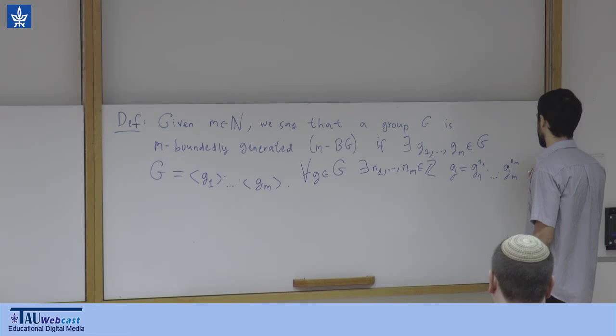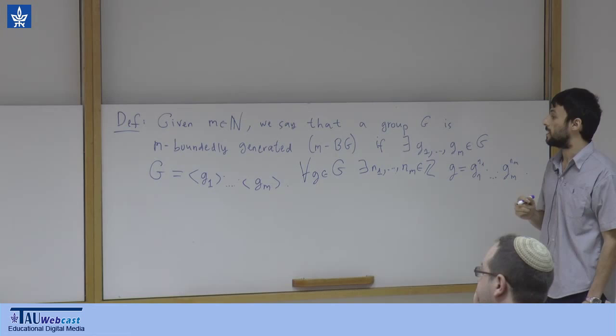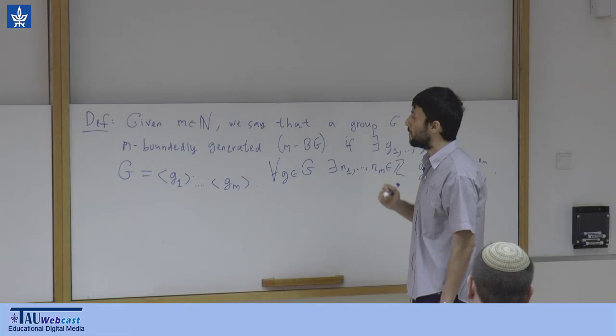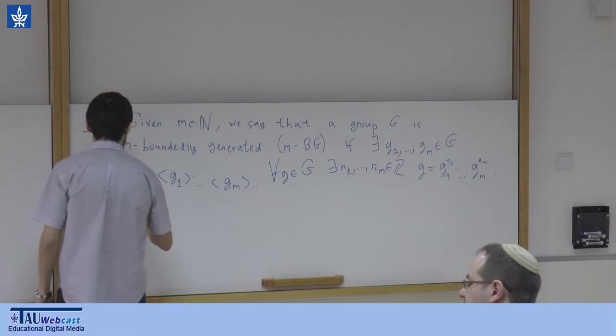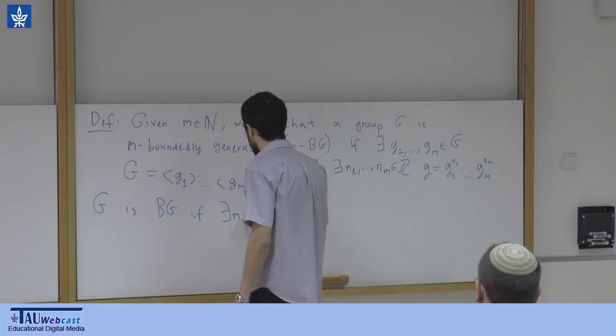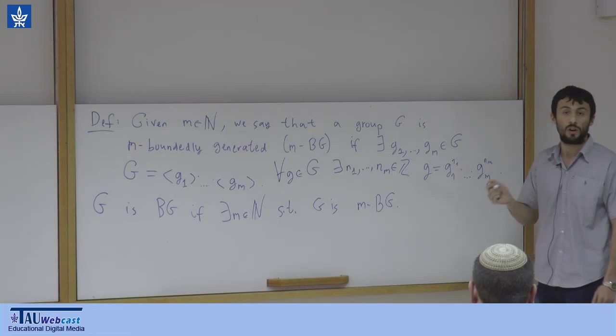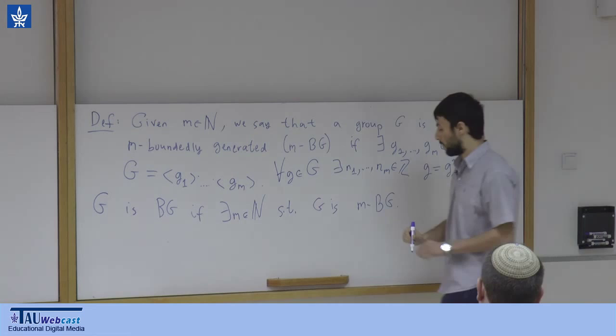By that I don't mean that G is a direct product of these cyclic subgroups, nor that they commute or are normal. I just mean that as a set, G is a product of these cyclic subgroups. This notion of bounded generation is a refinement of the notion of being finitely generated. We say G is boundedly generated if there exists some m such that G is m-boundedly generated.